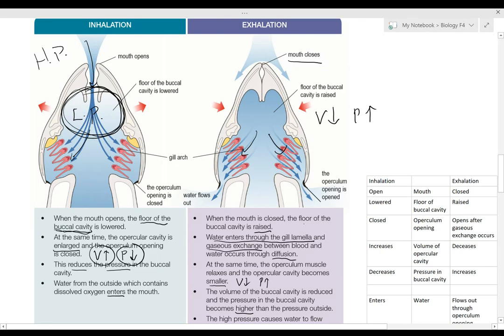After the water enters the mouth, the mouth will close and the floor of the buccal cavity is raised. That means the volume decreases and the pressure increases. Now the mouth closes, so there's no way for the water to move out of the mouth. The only way is to move backwards through the gills.